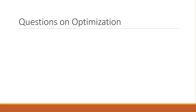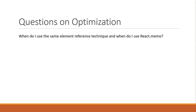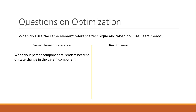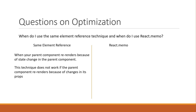The first question is: when do I use the same element reference technique and when do I use React.memo? You can use the same element reference technique when your parent component re-renders because of state change in the parent component, which results in the child component having to re-render. Do keep in mind that this technique does not work if the parent component re-renders because of changes in its props. So same element reference: yes when state is causing the parent to re-render, and no if props is causing the parent to re-render.